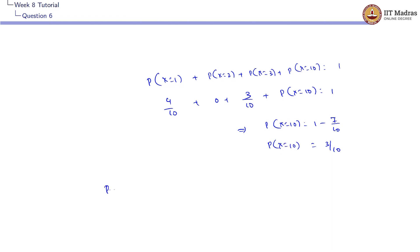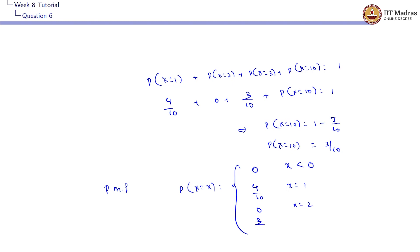So the PMF is: P(X = x) = 0 for x less than 0; 4/10 for x = 1; 0 for x = 2; 3/10 for x = 3; 3/10 for x = 10; and 0 for all other values of x. This is the probability mass function of the given cumulative distribution function.